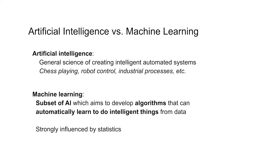Let's jump in and talk about what machine learning is. First, you might be curious how it differs from another term you've heard, which is artificial intelligence. Artificial intelligence is the general science of creating intelligent automated systems. This could be things like chess playing software, software for controlling robots or industrial processes, and many other examples.